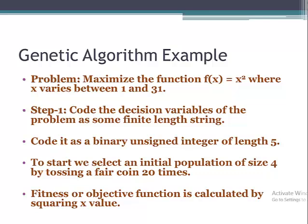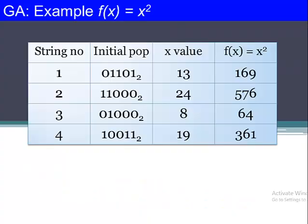Any solution from the solution space will be presented in the form of a string of length 5. Initially, our population will have four different solutions. The fitness or objective function is calculated by squaring the x value, where x is any number in the solution space.